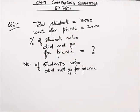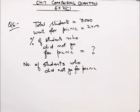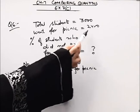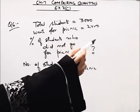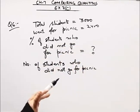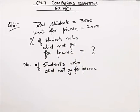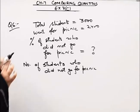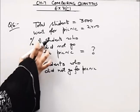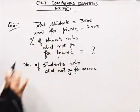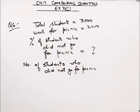Then they will make a picnic program. How many students turned up for the picnic? 2400 kids went to the picnic. We have to find out the percentage of students who did not go for the picnic.